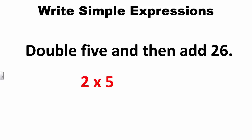Let's look at some examples. Write an expression for double 5 and then add 26. Double 5 is best written as 2 times 5. Then we need to add 26, so the expression can be written as 2 × 5 + 26.